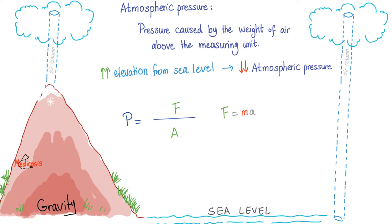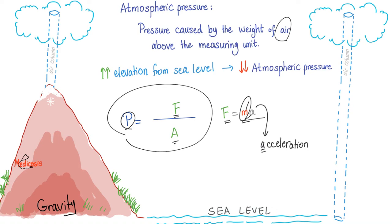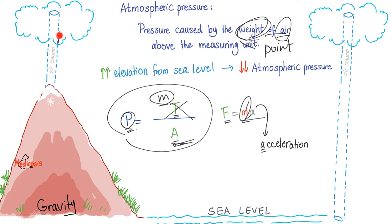This is absolutely correct. P equals F over A — pressure equals force over area. Pressure is the mass of air above a measuring point. So the higher the altitude, the lower the pressure, and the lower the altitude, the higher the pressure. Why? It's called gravity. Gravity is at the center of the earth — the earth is literally pulling air towards the center. Therefore, you'll have more pressure at sea level and less pressure on top of the mountain. Therefore, you'll have more oxygen at sea level and less oxygen on top of the mountain.